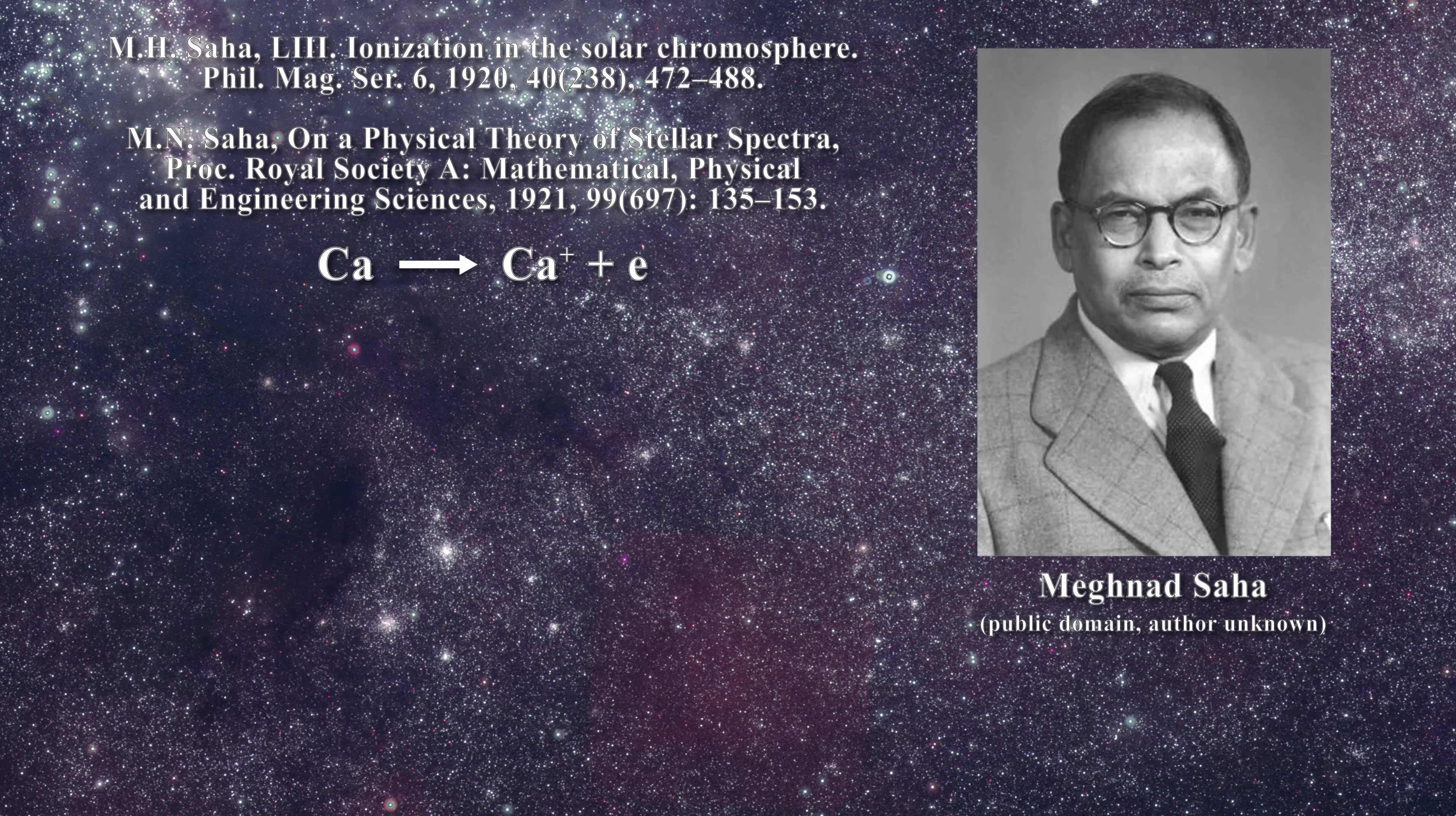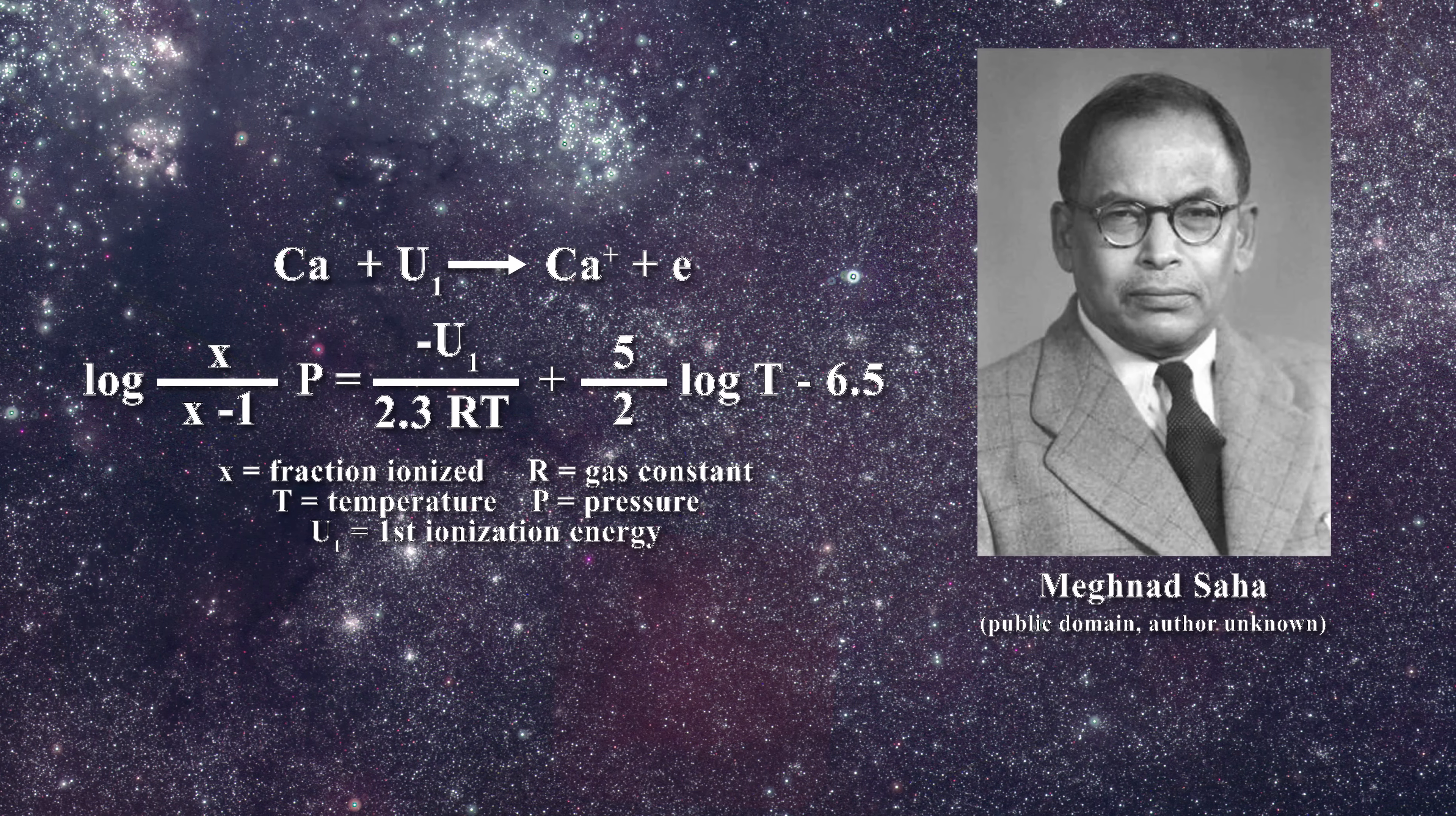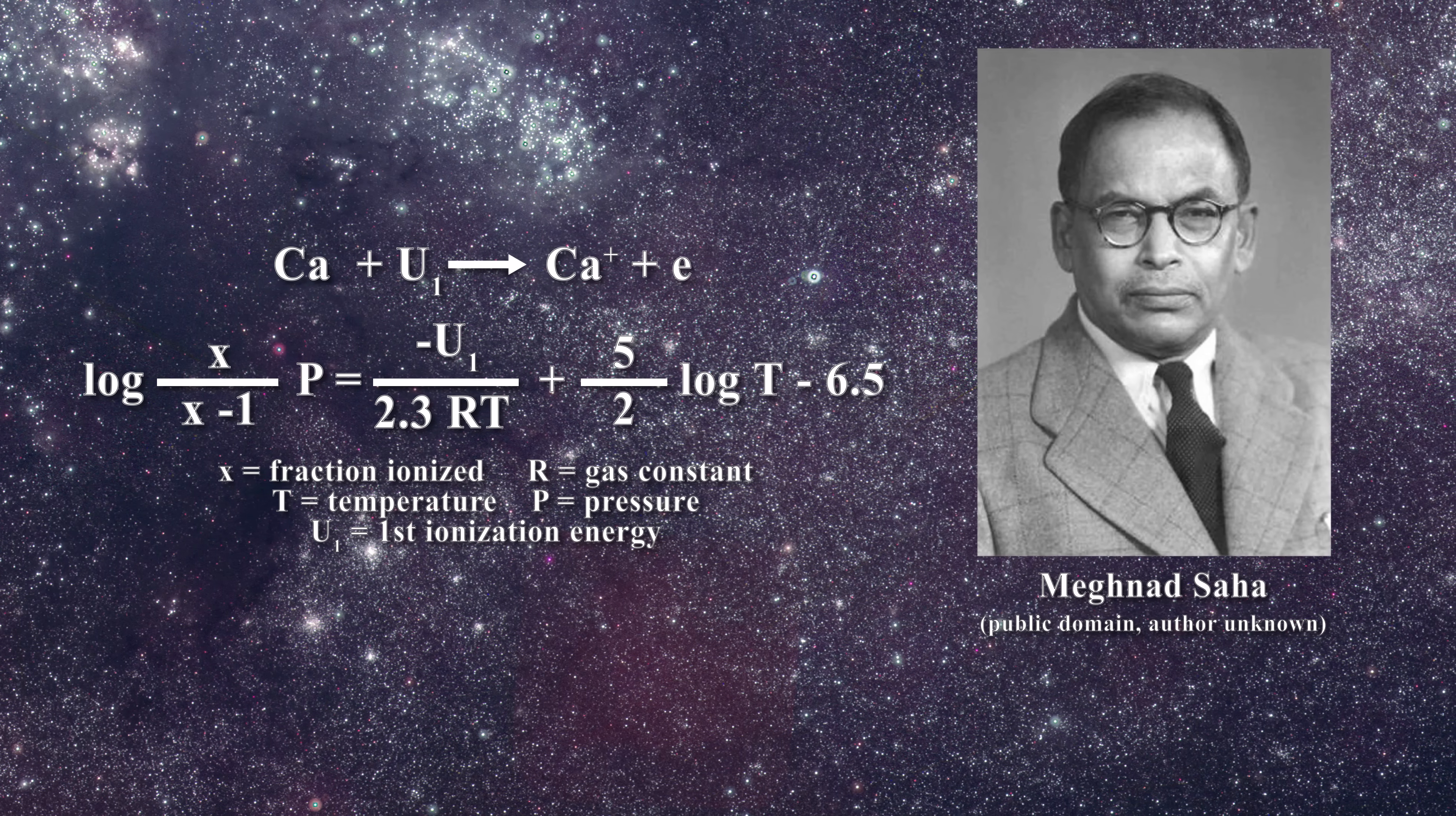He described the first ionization in this manner and then wrote down this expression to characterize the problem. Note that x represents the fraction of the atom which is ionized, r represents the gas constant, t the temperature, p the pressure, and u1 the energy of the first ionization. Saha considered that his expression was valid under conditions of thermal equilibrium.